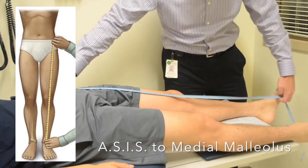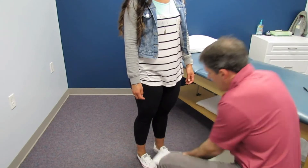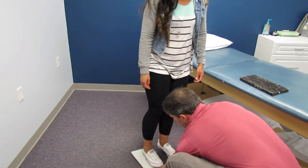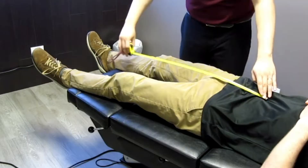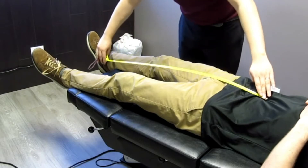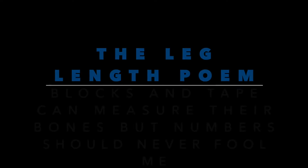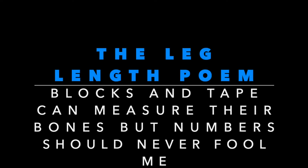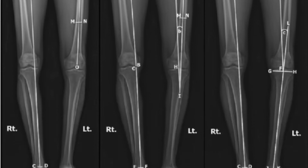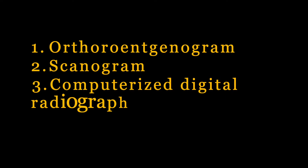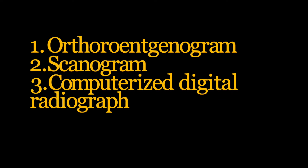The next point is critical. There is still disagreement regarding the validity and reliability of measuring leg length with blocks and tape measures, but one agreement does exist: while these techniques can be useful as screening tools, they are not an accurate measurement of leg length. The gold standard for measuring leg length is still radiography, and here are the three methods used to measure leg length.